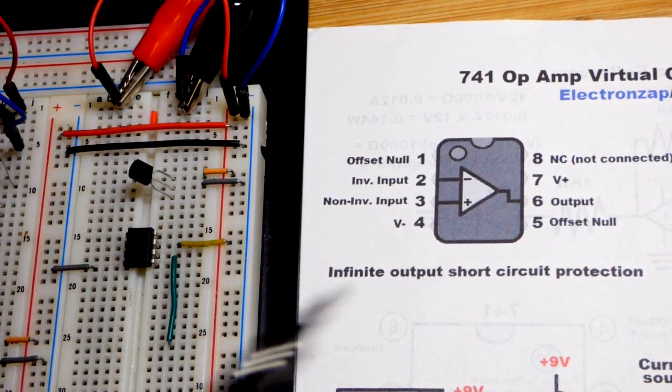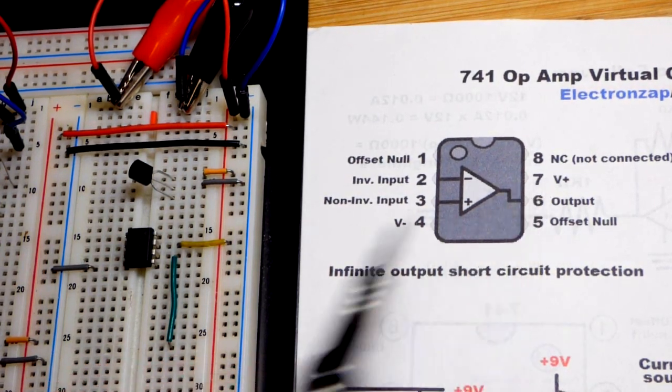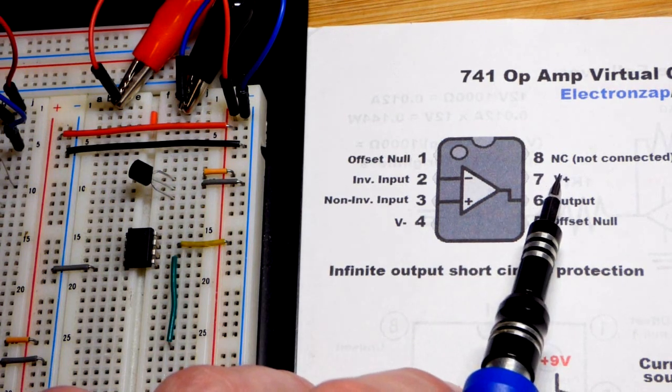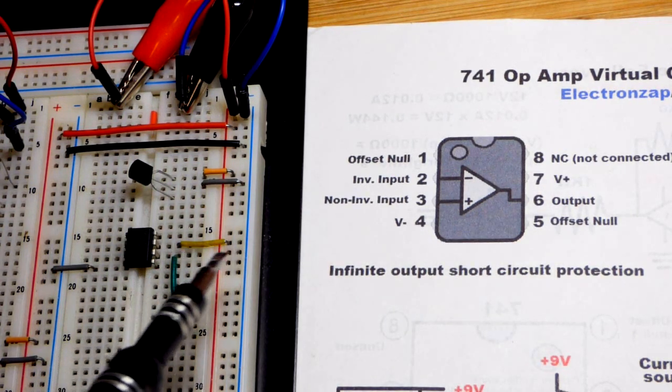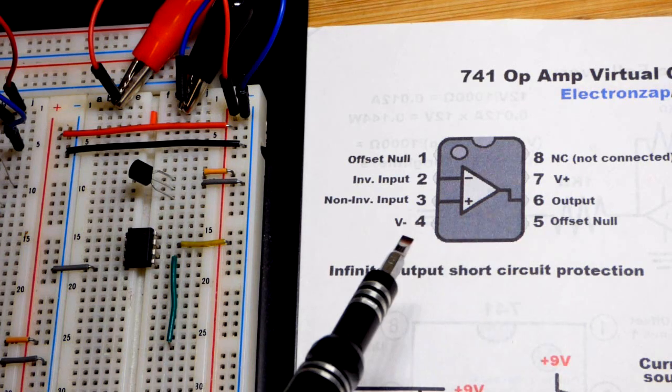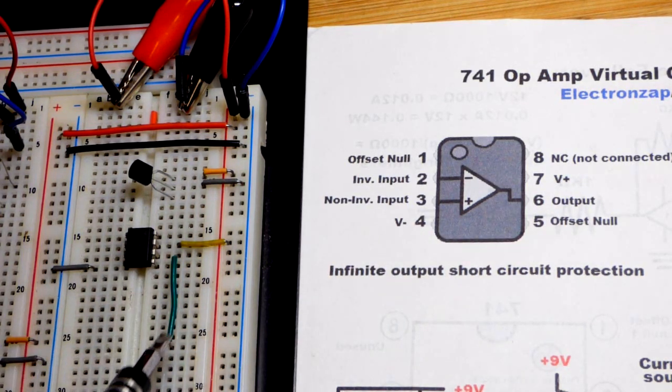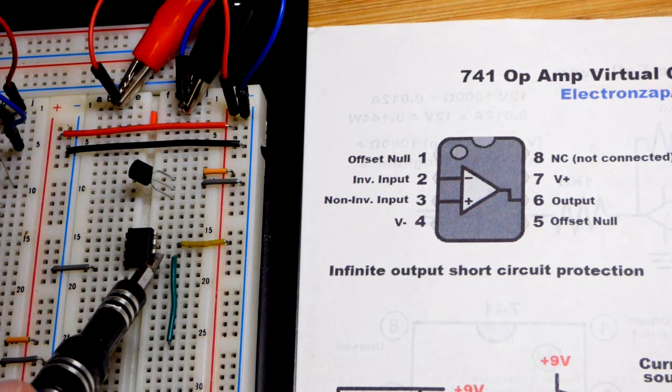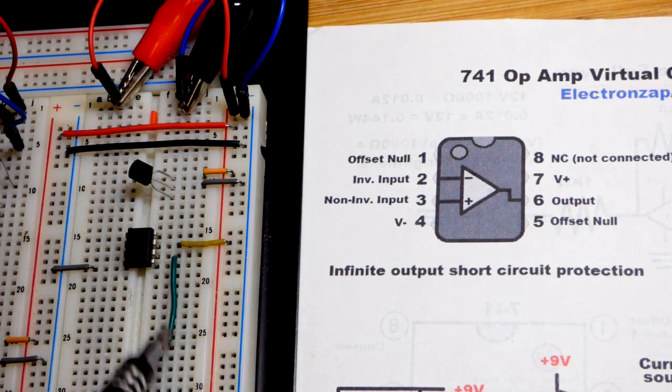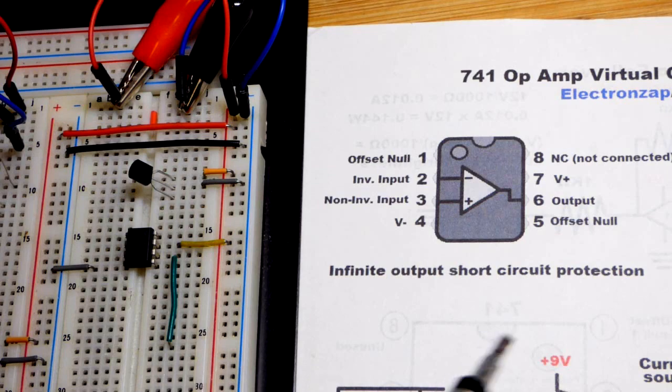So you can see we got to power the 741 op amp. There's the pin layout. Pin number 7, second pin down to the right, that goes to the positive side of the power supply. And then pin number 4 goes to the negative side of the power supply. I have this jumper to pin number 6, the output. So that will be our virtual ground.